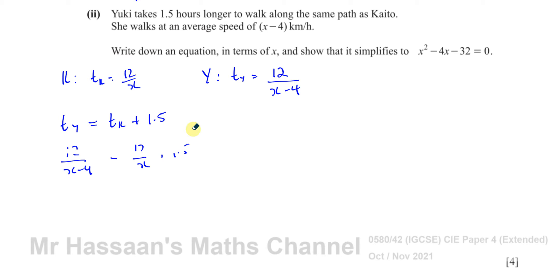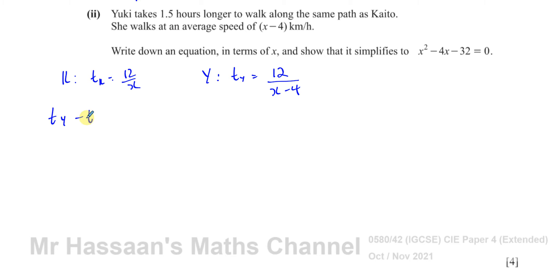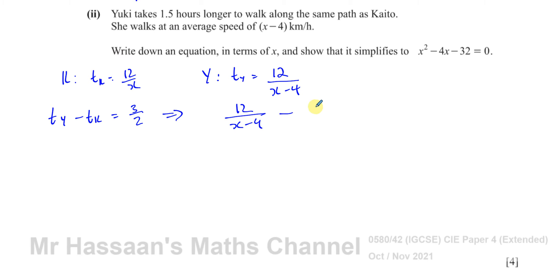So subtracting Cato's time from Yuki's time gives 1.5, which is 3/2. Keeping it as fractions, we have: 12/(x − 4) − 12/x = 3/2. Now we want to show this becomes the required equation. We can make the denominators on the left-hand side the same.